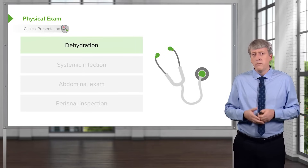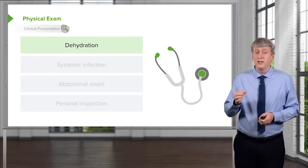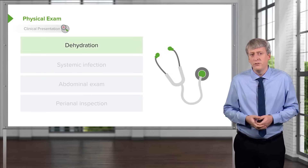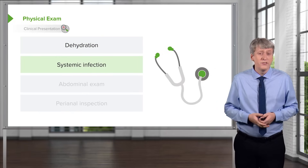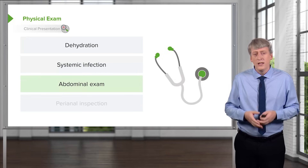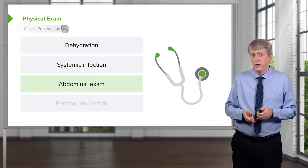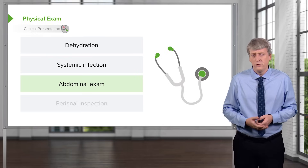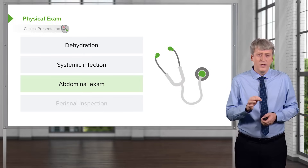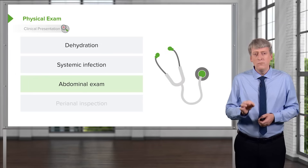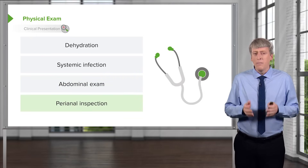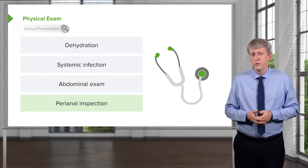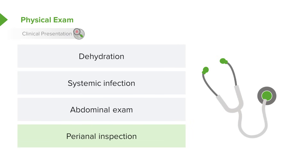On exam, it is critically important to look for signs of dehydration. Tenting is rare and only seen at extreme ends of dehydration; mostly you're going to look at mucous membranes and see if they're moist, and see if the child is making tears when they cry. Look for signs of systemic infection. The abdominal exam is critical, especially looking for rebound and guarding. A perianal inspection is important, especially if you're concerned about inflammatory bowel disease — sometimes a rectal tag or fissure is the best clue that the child has Crohn's disease.